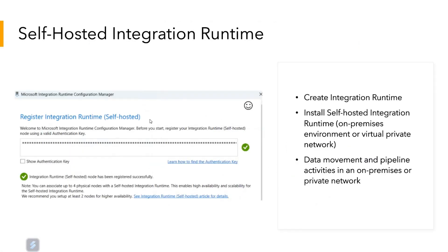This is what the integration runtime does when you install it locally. When you create an integration runtime on Azure, you will be provided with a key, and you basically need to copy and paste the key into the local integration runtime and launch it — essentially connecting it to your Azure cloud.